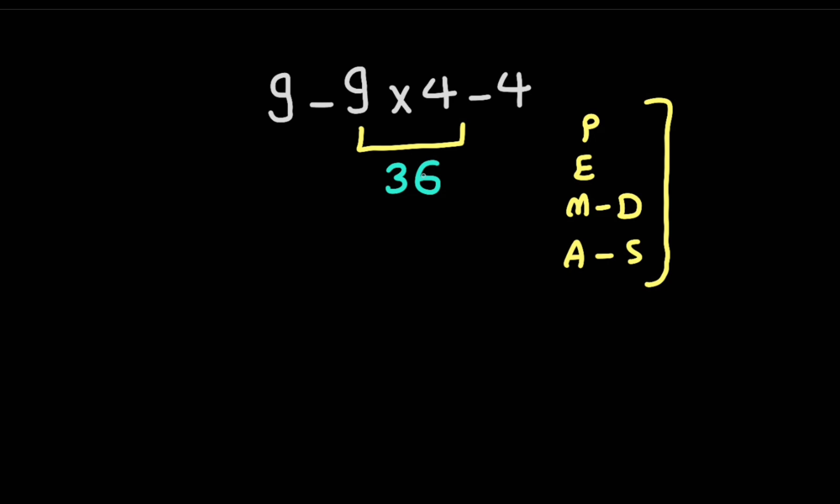Now let's rewrite the expression: 9 minus 36 minus 4. When we have more than one subtraction in one expression, we have to solve from left to right.